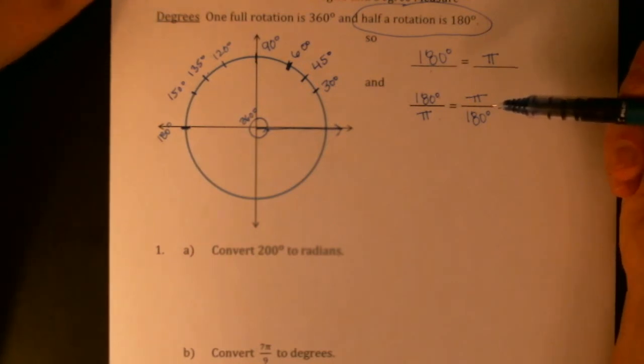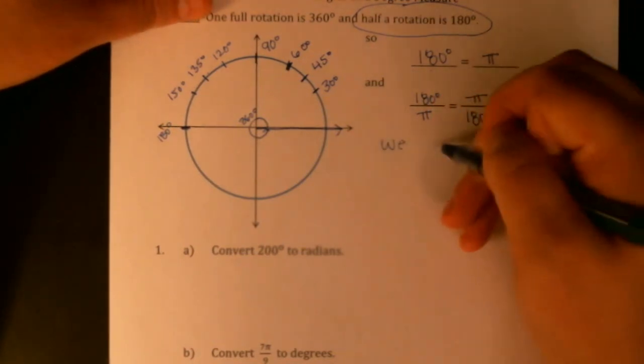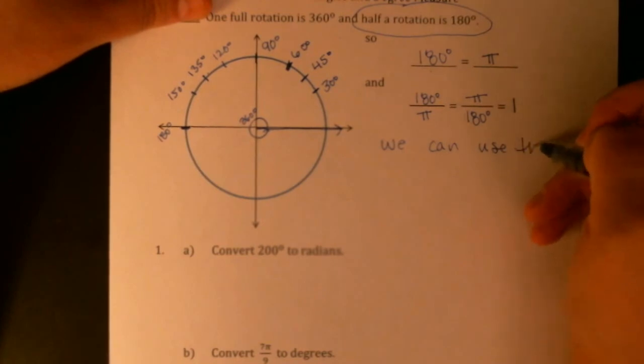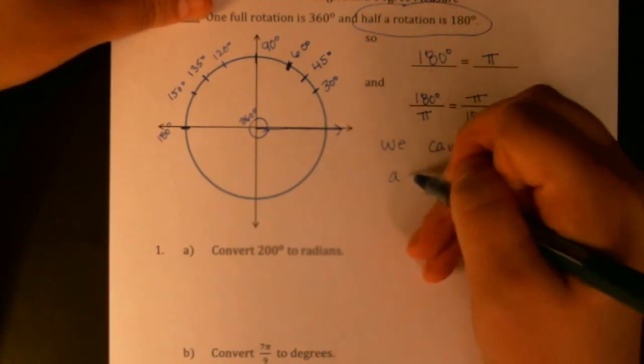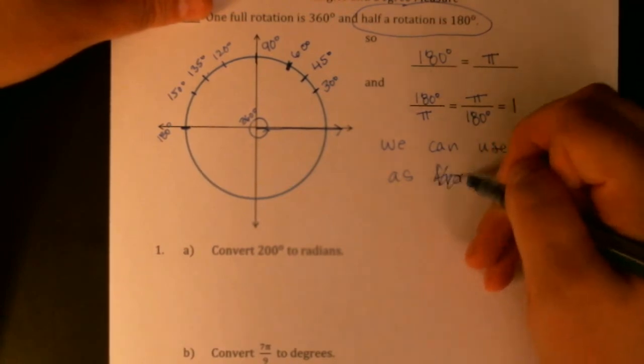The same should be true if we take π over 180 degrees, which means we've just built a fraction we can use for converting units. If you multiply something by one it doesn't change the value, but we've very cleverly written one in two different ways that introduce or remove units without changing the value of the angle that we're looking at.